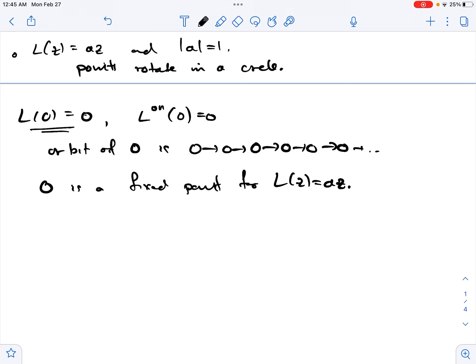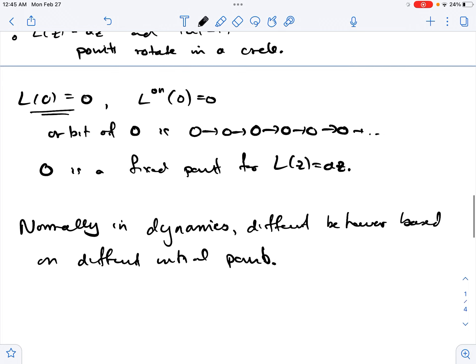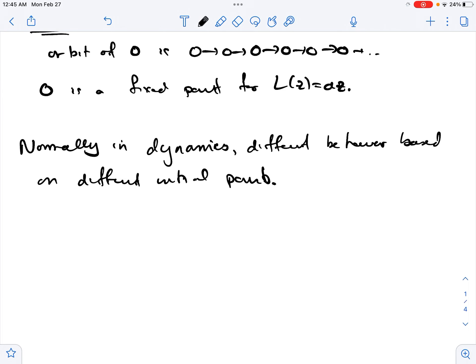Normally in dynamical systems and dynamics, you get different behavior based on different initial points. So normally, for a linear map basically, the only thing that controlled the behavior of the system was the parameter. So for linear maps, the parameter a is all that controlled the behavior of orbits.